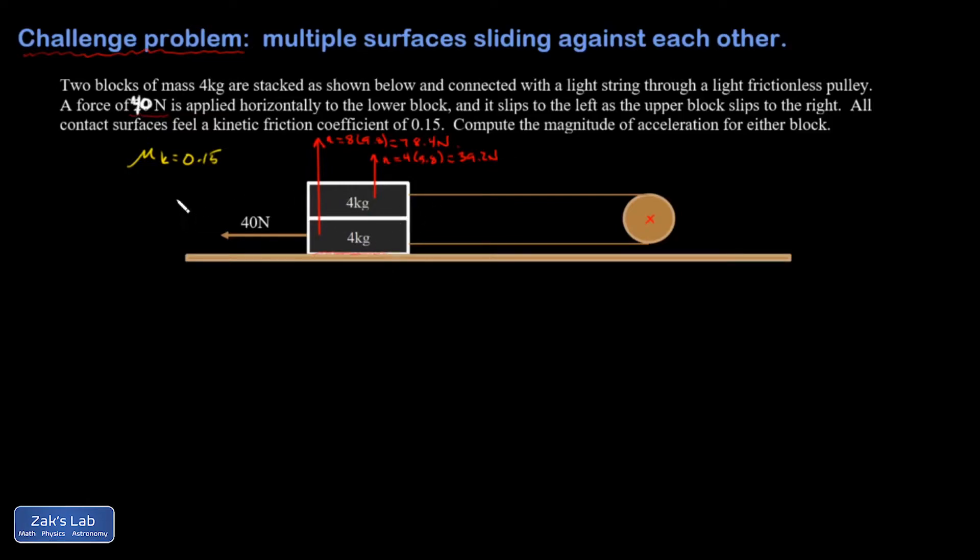All right, then I can start thinking about friction forces. For this bottom block I'm going to have an acceleration to the left. I'm going to call that the positive direction. So that block is sliding to the left across that surface and the surface is opposing that direction of slipping and I'm going to call this Fk1. It's going to be equal to mu k times the normal force at that interface. So that's 0.15 times 78.4, and I'm just going to round it to 11.8 newtons.